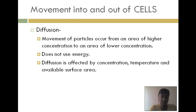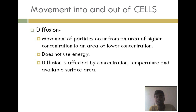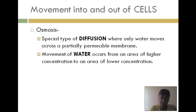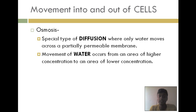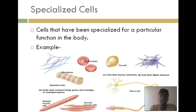Now let's look at movement into and out of cells. Diffusion is one way of this movement — particles move from an area of higher concentration to an area of lower concentration, and it does not use energy. Diffusion is affected by concentration, temperature, and available surface area. Osmosis is a special type of diffusion where only water moves across a partially permeable membrane, from an area of high concentration to an area of low concentration.